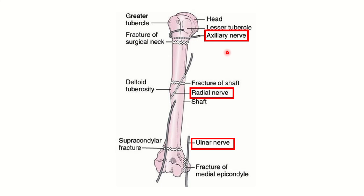In another picture, which is very important for the exam and from which questions frequently arise — here at this point is the surgical neck, so surgical neck involves the axillary nerve. Here is the mid-shaft of the humerus, and near the deltoid insertion, here is the radial nerve. And we can see in the lower part there is the supracondylar area — in the supracondylar part there is another nerve, which is the median nerve.